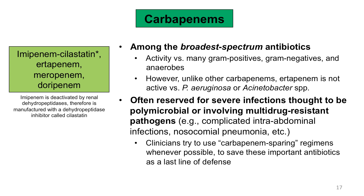The carbapenems, as you heard in the part one video, are often reserved for severe infections thought to be polymicrobial or involving multidrug-resistant pathogens — for example, complicated intra-abdominal infections or nosocomial pneumonia. Clinicians always try to use carbapenem-sparing regimens whenever possible, to save these important antibiotics as a last line of defense.